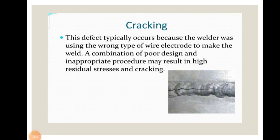The next welding defect is cracking. This defect typically occurs because the welder was using the wrong type of wire electrode to make the weld. A combination of poor design and inappropriate procedure may result in high residual stresses and cracking. To avoid cracking, proper wire electrodes should be chosen, and residual stresses should be minimized through appropriate welding procedures.